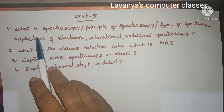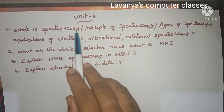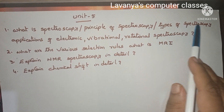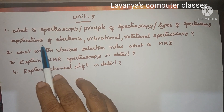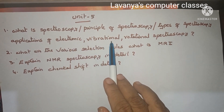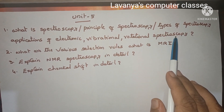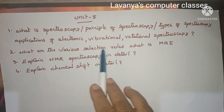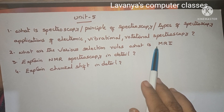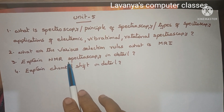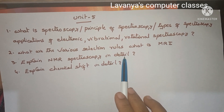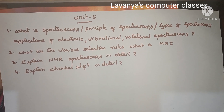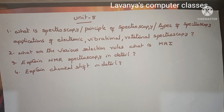Unit 5 questions: what is spectroscopy? Principle of spectroscopy, types of spectroscopy, and applications of electronic, vibrational, and rotational spectroscopy. Next one is: what are the various selection rules? What is MRI? Explain NMR spectroscopy in detail. And explain chemical shift in detail. These are the important questions in Unit 5.